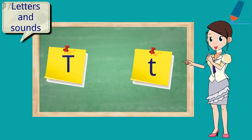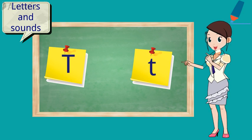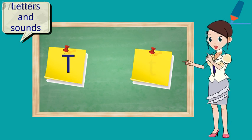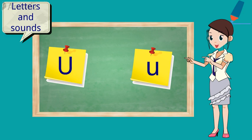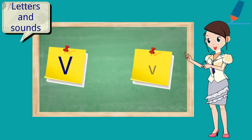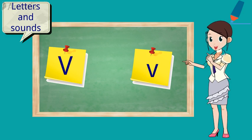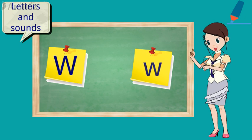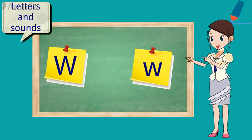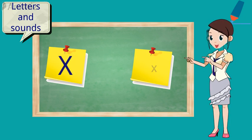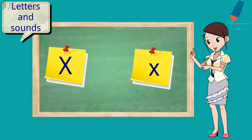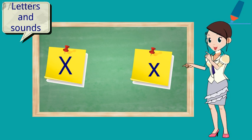The T says T. Every letter makes a sound. And T says T. The U says U. Every letter makes a sound. And U says U. The V says V. Every letter makes a sound. And V says V. The W says W. Every letter makes a sound. And W says W. The X says ks. Every letter makes a sound. And X says ks.